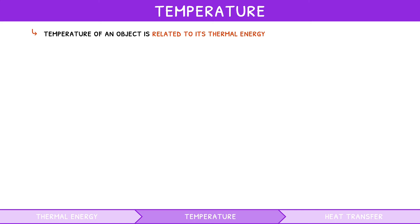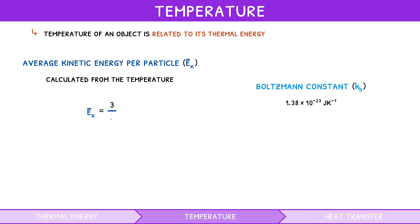In an ideal gas, the average kinetic energy per particle can be calculated from the temperature using the Boltzmann constant, equal to 1.38 times 10 to the minus 23 joules per Kelvin. The equation is average kinetic energy equals 3 divided by 2 times the Boltzmann constant, times by temperature.